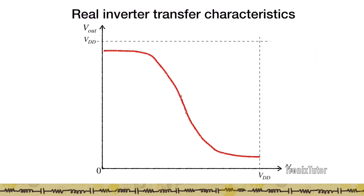In reality, the transfer characteristics don't look so ideal because we can't design a system that has infinite gain. In a real inverter, the characteristics look somewhat different. Here I've plotted input voltage versus output voltage, with maximum voltages marked. The input voltage varies between 0 and Vdd and the output voltage varies between 0 and Vdd. The generic nature of the curve shows that when input voltages are low, output voltages are high and when input voltages are high, output voltages are low — indicating an inverter.